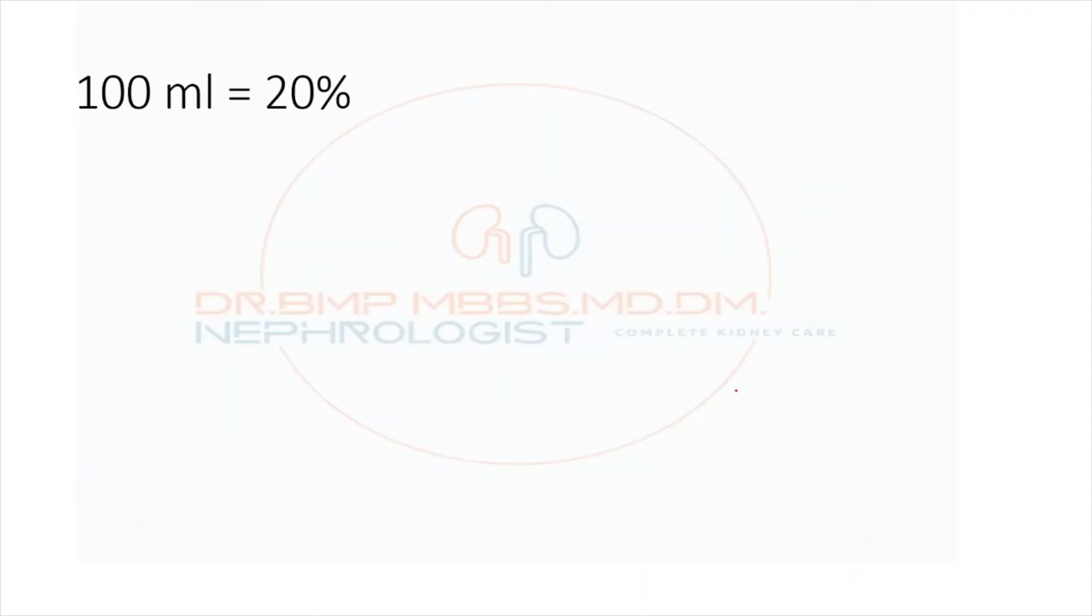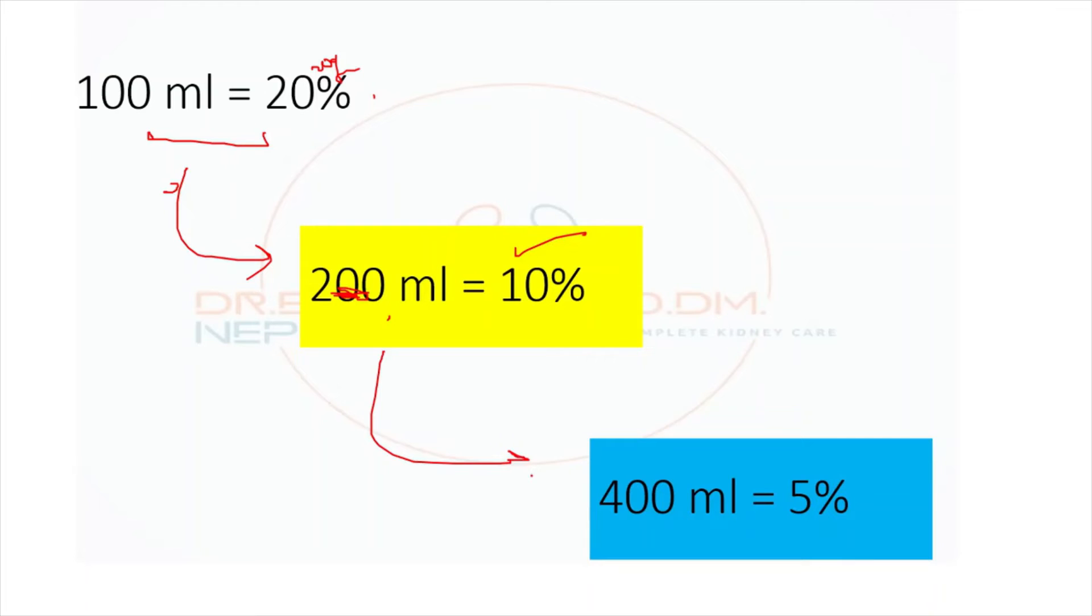So most of the time, we might like to use an isoosmolar solution for plasma pheresis. How to convert this 20 percent, that is 20 grams of albumin, to 5 percent? Just add 100 ml of NS to it, then pick 200 ml which contains 10 percent of albumin, add equal amount of NS to it. Then pick 400 ml, now it is 5 percent, that is 5 grams, so an isoosmolar solution. This can be given or used during plasma pheresis or any other indication where we have to give albumin as an isoosmolar solution.